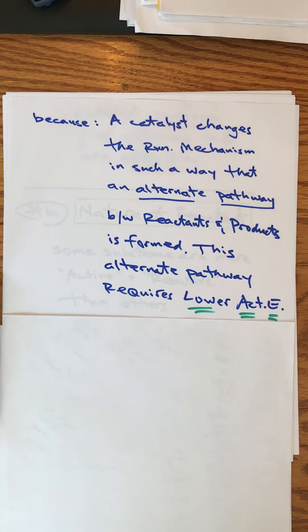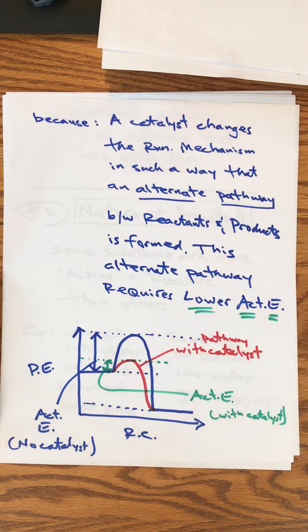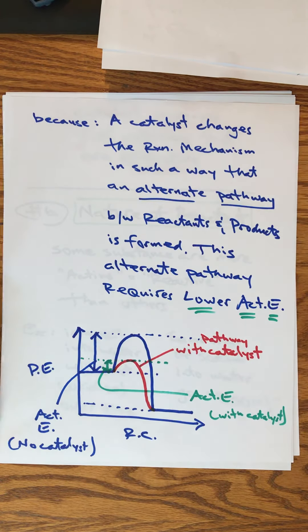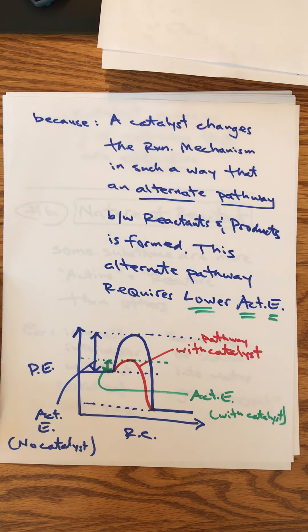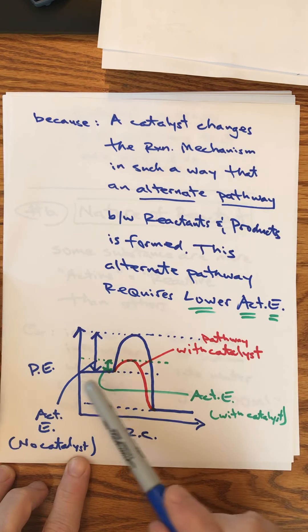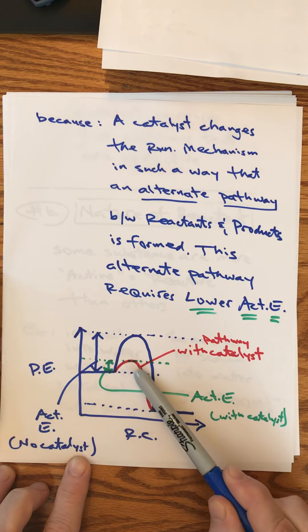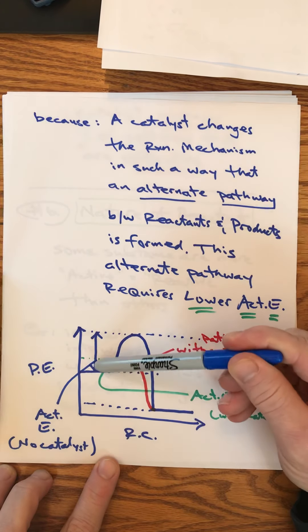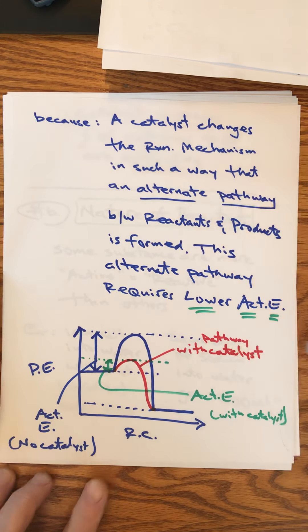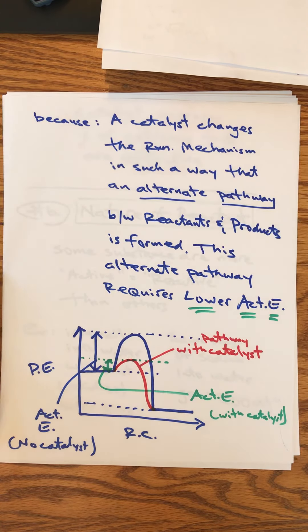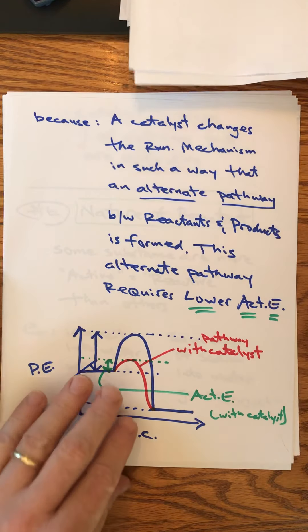That alternate pathway has a lower activation energy. If you're looking at your potential energy diagram, in blue here's the reaction without a catalyst. In red, this is the reaction pathway with a catalyst. You can see the activation energy went from fairly large to much lower. So when you add a catalyst you're not changing the number of collisions per se, but you're changing the percentage of them that are effective.